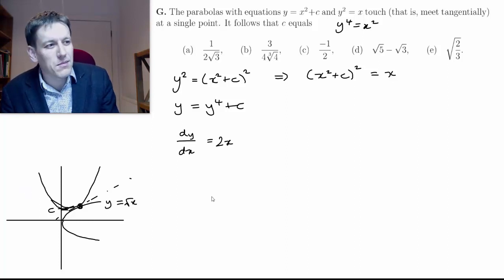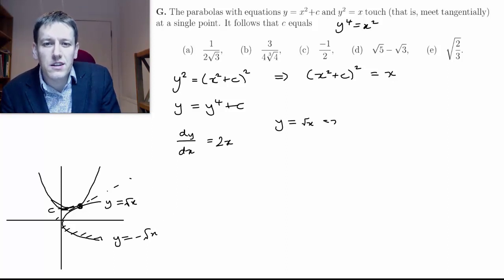So it's just the same as looking at y = √x here. I can ignore the bottom part which would be y = -√x. So for y = √x, which is x^(1/2), I've got dy/dx equals 1/2 x^(-1/2).